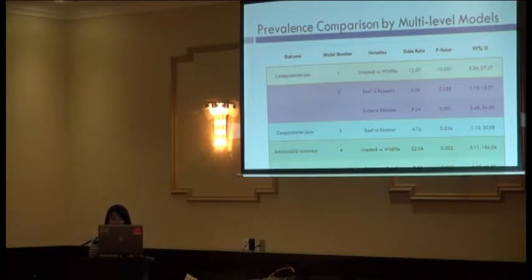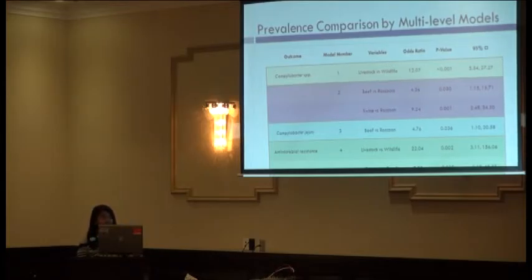When looking at antimicrobial resistance, livestock were much more likely to have isolates exhibiting antimicrobial resistance. C. jejuni was also much more likely to exhibit antimicrobial resistance compared to C. coli.